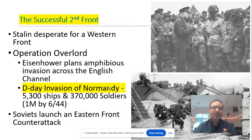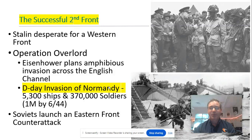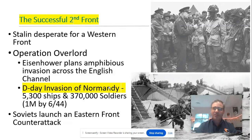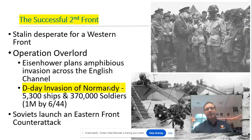So when does the second front occur? It occurs with Operation Overlord, which we better know as the D-Day invasion of Normandy. This occurs in June of 1944 — about two and a half years after the United States officially joins the war in 1942. So from January 1942 through mid-1944 — covering 1942, 1943, and halfway through 1944 — it takes two and a half years to open up that western front. Meanwhile, the eastern front is being devastated.